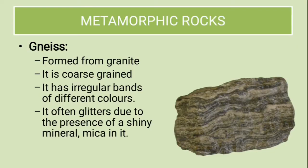Then comes gneiss. Formed from granite, it is a coarse-grained rock. It has irregular bands of different colors and it often glitters due to the presence of the shiny mineral mica in it.